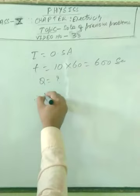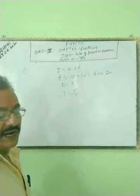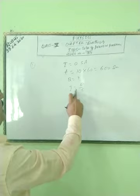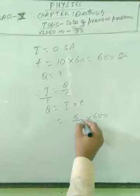As you know, I is equal to Q by T. This is your formula for the flow of electric current. The rate of flow of electric charge is called current, therefore I equals Q by T. Now Q equals I into T. I is 0.5 means 5 by 10 and time is 600, that is 300 coulombs.